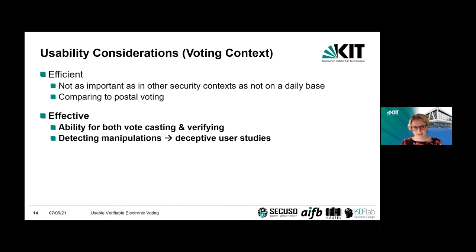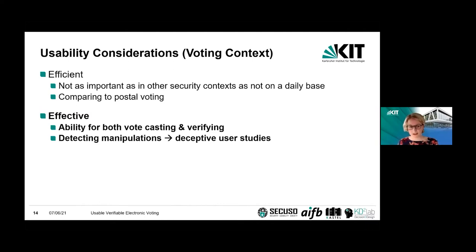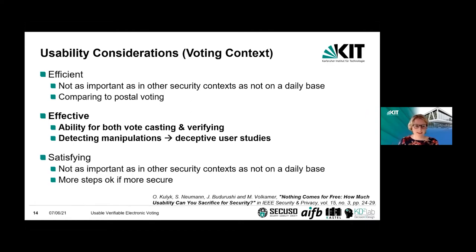For effectiveness — we talk about end-to-end verifiable systems, including additional steps for individual verifiability. Effectiveness means you should be able to cast your vote and also be able to verify, and the second is obviously the most challenging. If you want to know how effective the system is in terms of verifiability, you need to conduct so-called deceptive user studies. For satisfaction, it's similar — no one wants to take a huge number of cumbersome steps, but again, it only happens once a year, so it might be more acceptable.